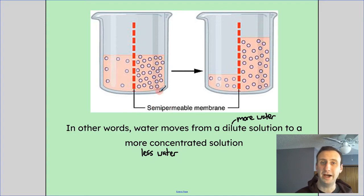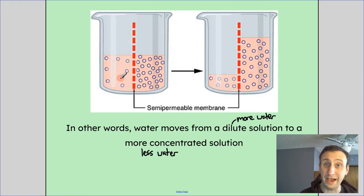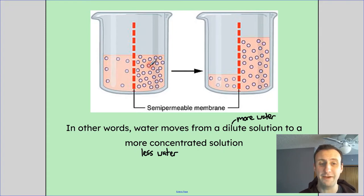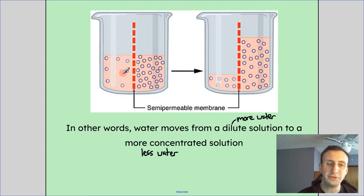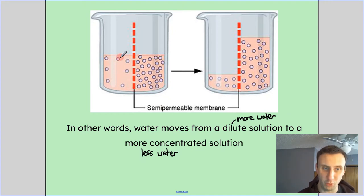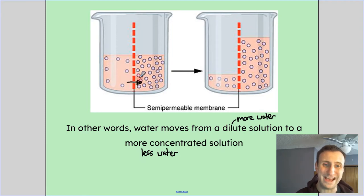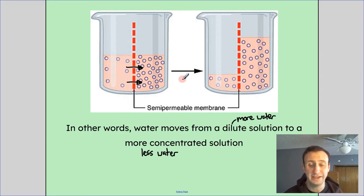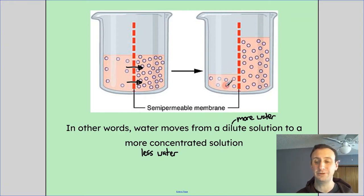Let's say we have this system set up, where I have a more concentrated solution to the right and a more dilute solution to the left. I have more solute — those pinky-purplish dots represent solutes — on this side than on this side. The rest represents the water, the general pink. Water is going to travel from where there's more water on the left-hand side to where there's less water on the right-hand side. So water is going to move in this direction for the net movement. More water is going to move to the right than moves to the left, and as a result I end up with more solution on the right-hand side and less on the left-hand side.